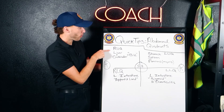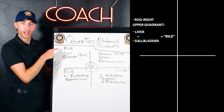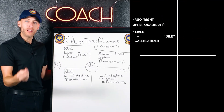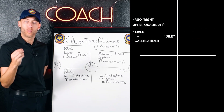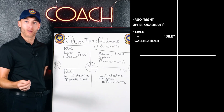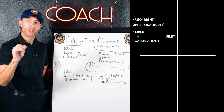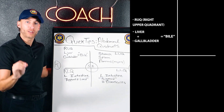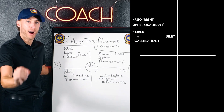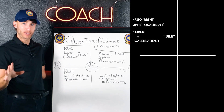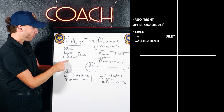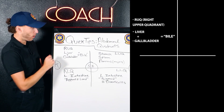We have the right upper quadrant. The liver is best friends with the gallbladder — they both have to do with bile. That's why they're in the same system, so they're both in the right upper quadrant.